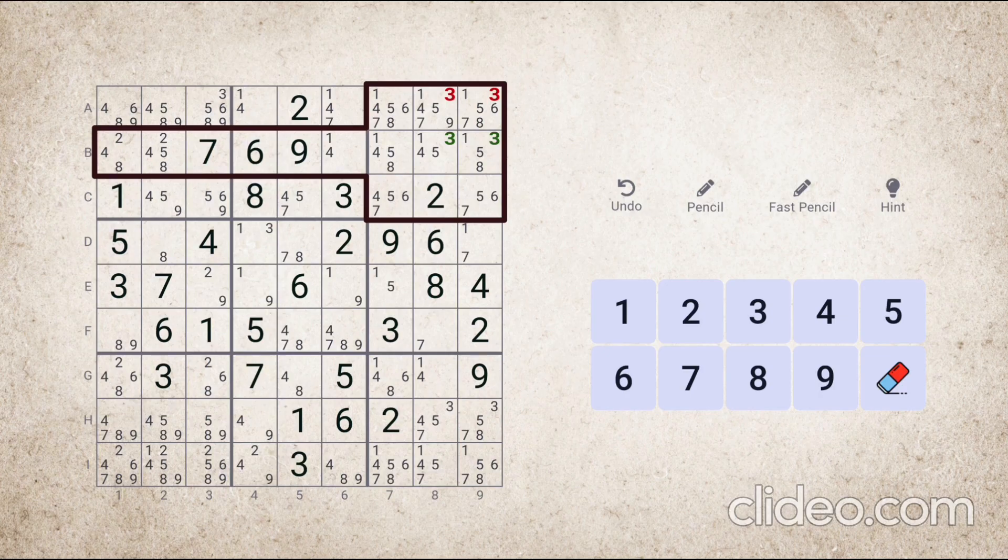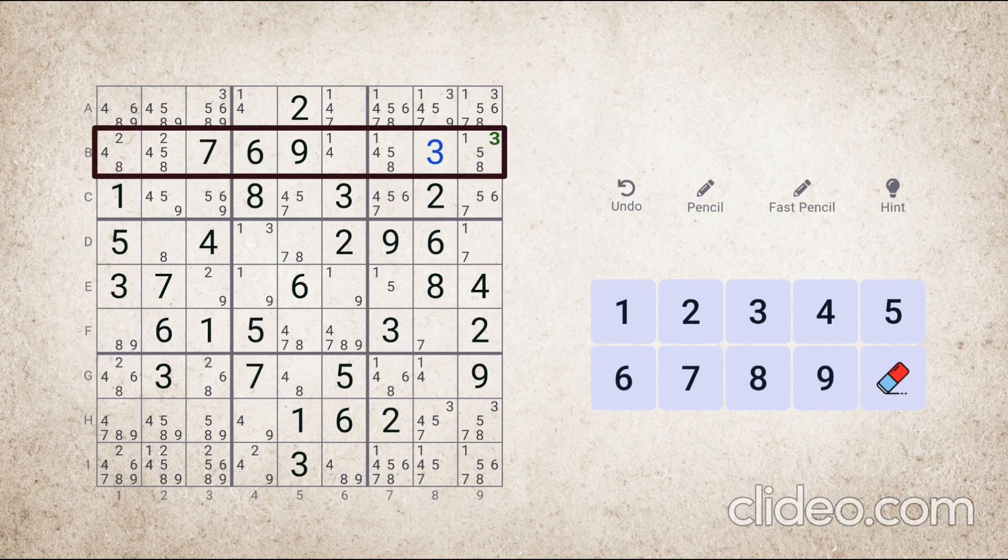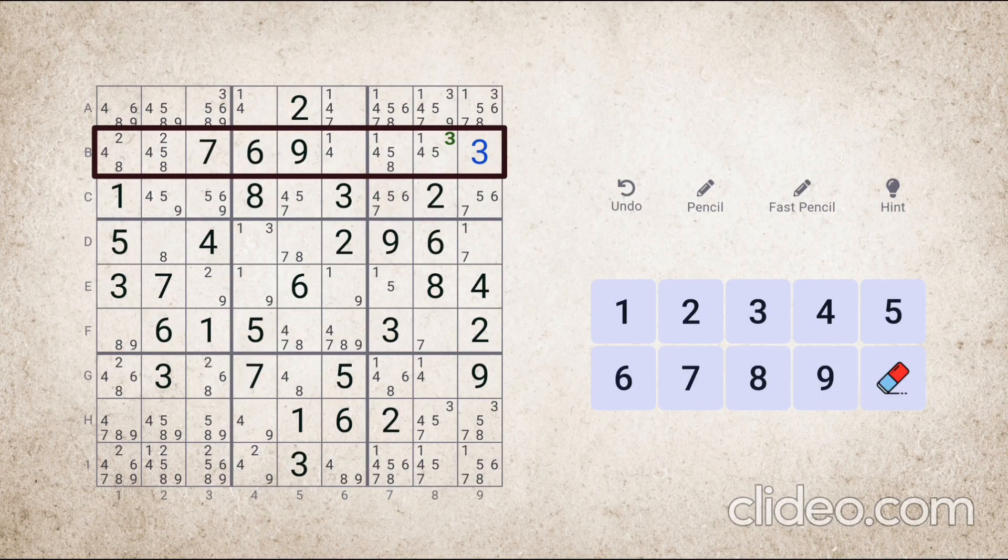Again, the reason is same as we saw in the example of the first type. Let's look at it one more time to understand it well. So we have two ways to place number three in this row. We can place it here or at this spot. Whichever of these two options we choose, as soon as number three is placed in this row, it will also be placed in this block.